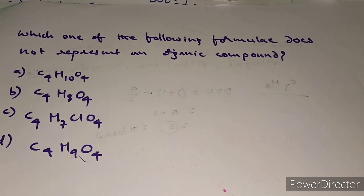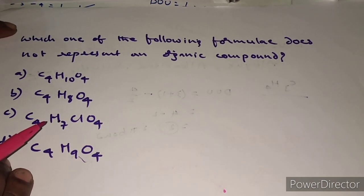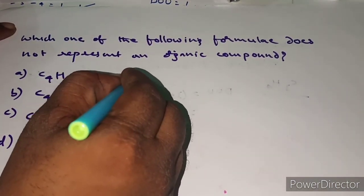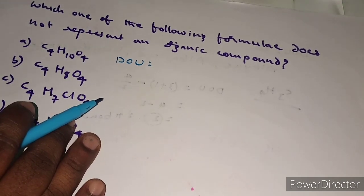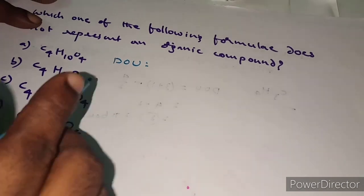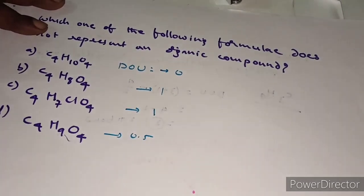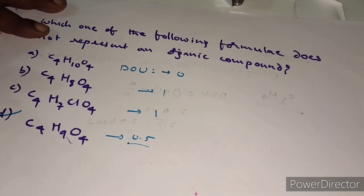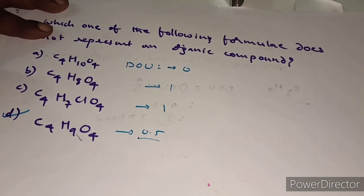Here is an exam question: which of the following formulae does not represent an organic compound? Just calculate the DOU for each. The first compound gives DOU = 0, second gives 1, third gives 1, and the fourth gives 0.5. Since 0 and 1 are whole numbers, those compounds can exist as organic molecules. The fourth compound gives a fraction, so it does not exist. Do more practice and keep in touch — subscribe for more videos!